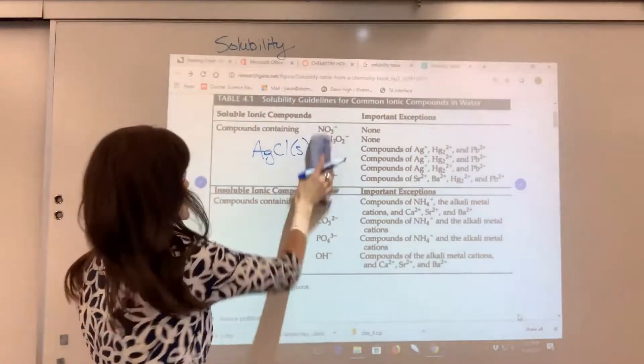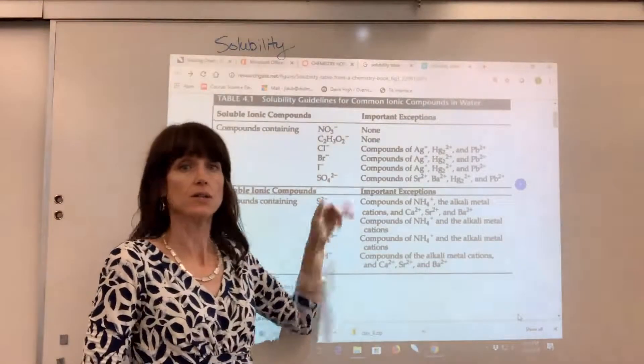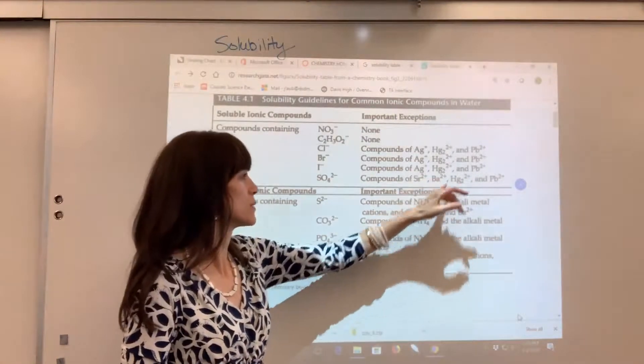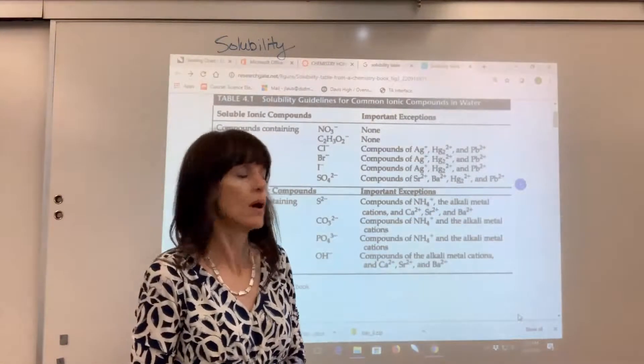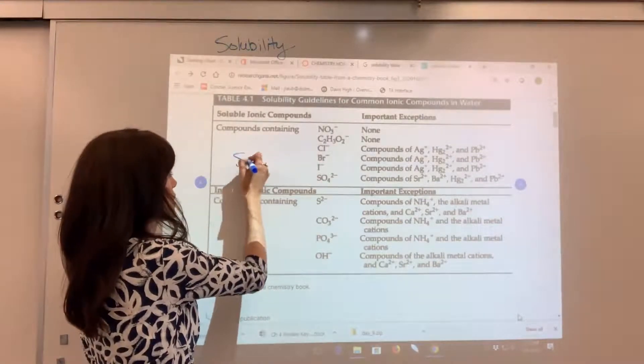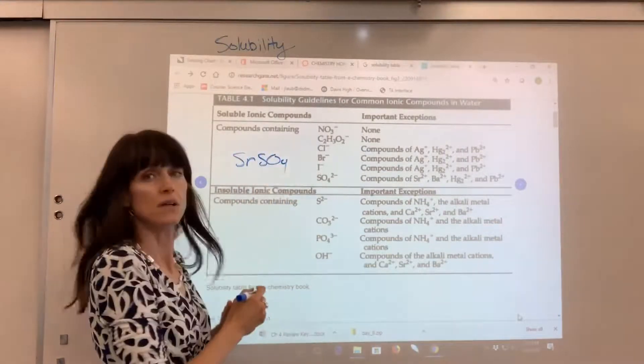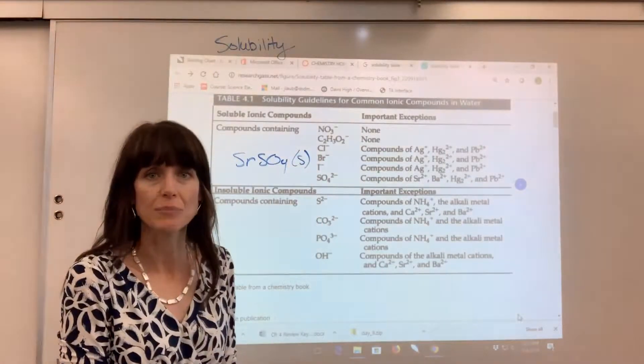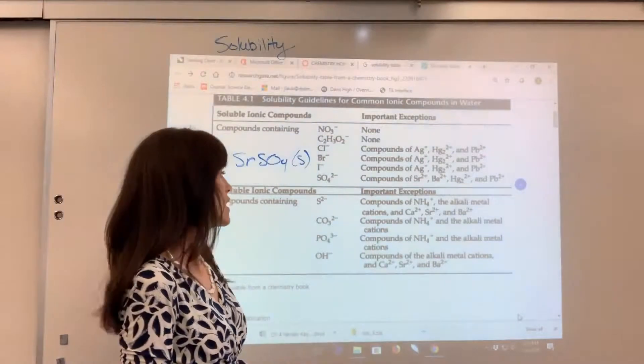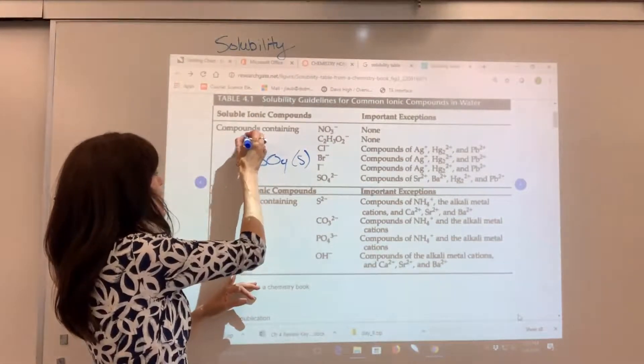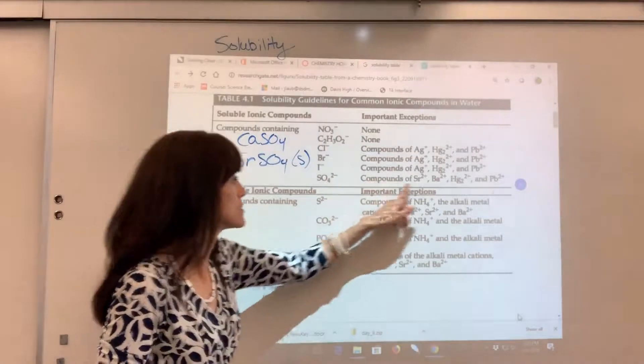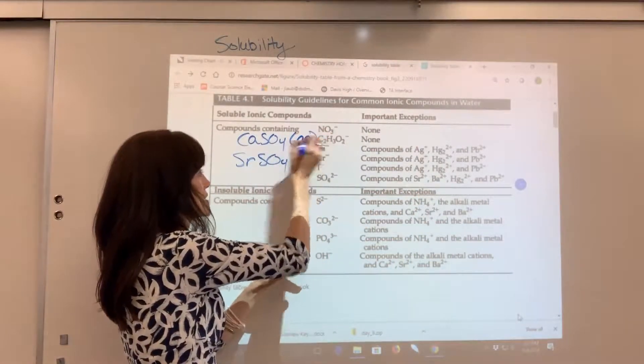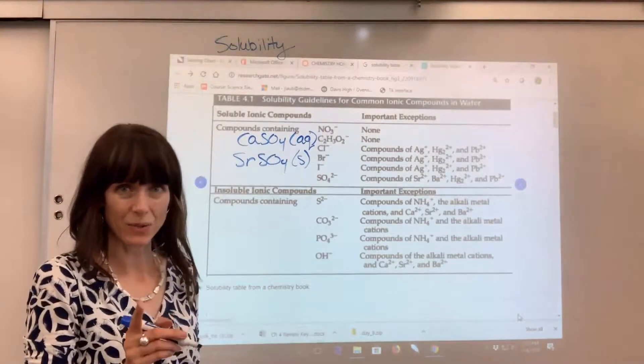Let's do another one with this. Let's take our sulfate. Sulfates are soluble, except with, and then here we have our list, strontium, barium, mercury one, lead two. Let's say that I have a strontium sulfate. If I were to write this down in a chemical reaction, I would put S for solid because it's insoluble. Now, to contrast that, if I had a calcium sulfate. Well, calcium's not in the exception here. So, that means it does dissolve. I put aqueous next to that.